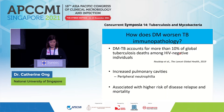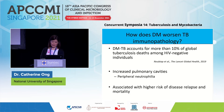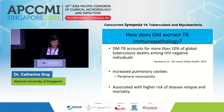Diabetes-TB co-morbidity accounts for more than 10% of global TB deaths among HIV-negative individuals. Our health minister declared a war on diabetes — before COVID came along. Diabetic TB patients have increased pulmonary cavities with more neutrophilia compared to non-diabetic TB patients. Diabetic TB patients are also associated with a higher risk of TB disease relapse, as well as a three- to four-fold increase in mortality.